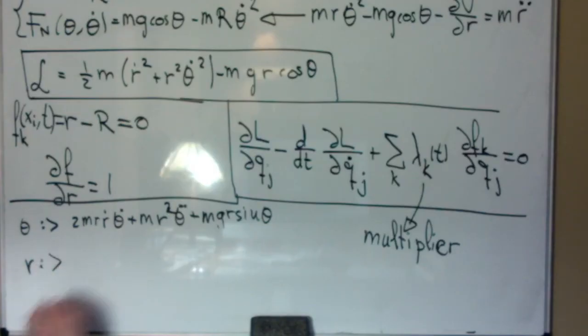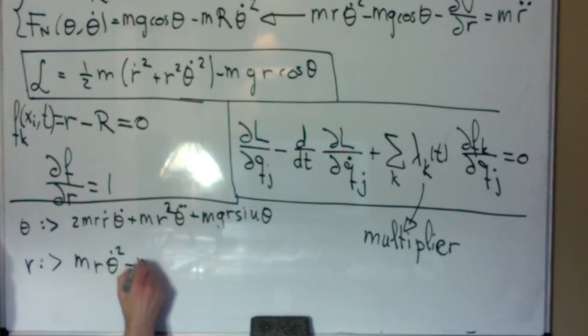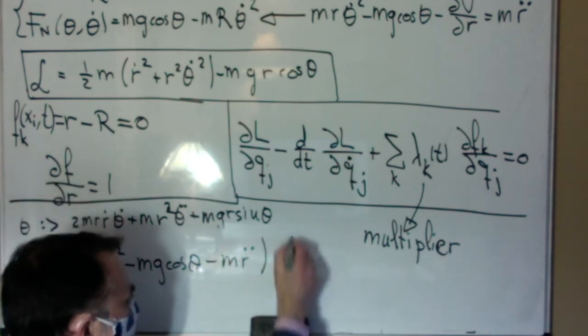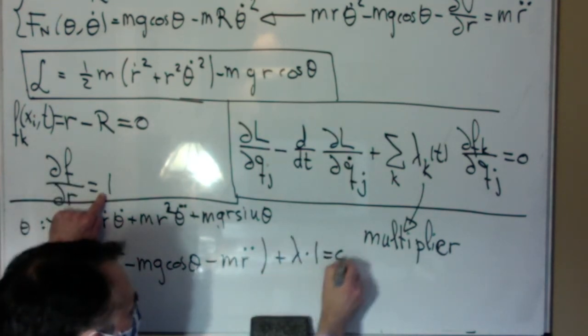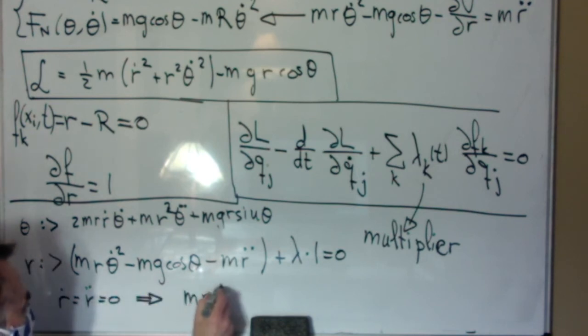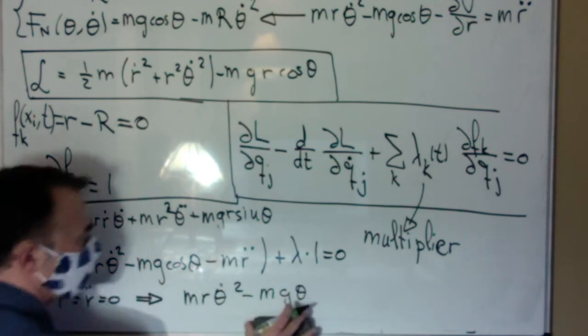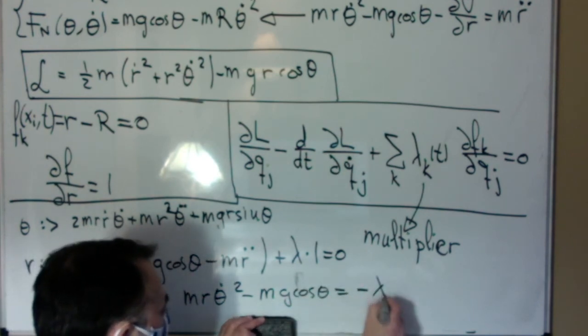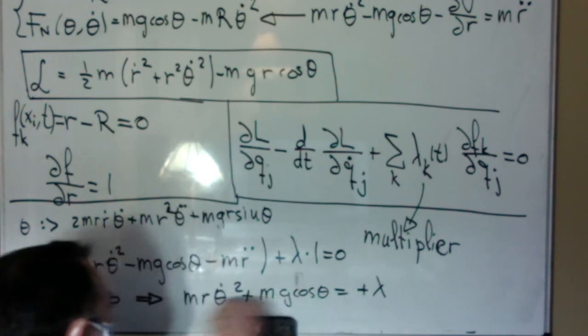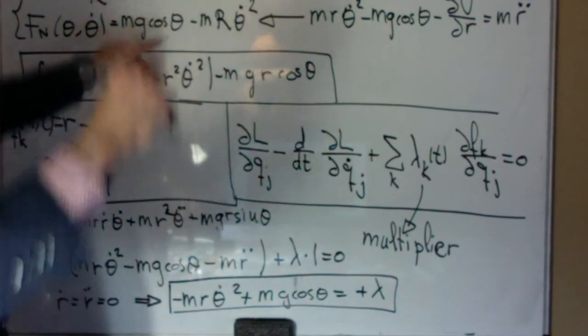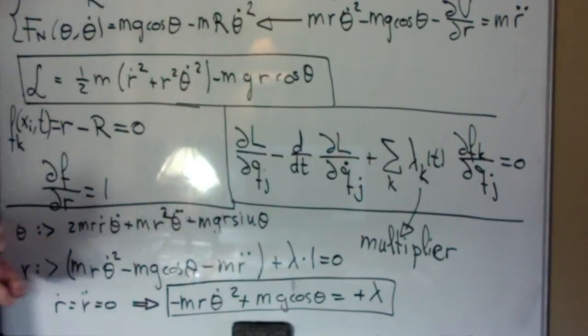For Lagrange equations with multipliers for the variable r, we have now the following equation. Which rewritten gives that the undetermined multiplier related to the variable r is just this, which happens to be the normal force as we proved a couple of videos ago.